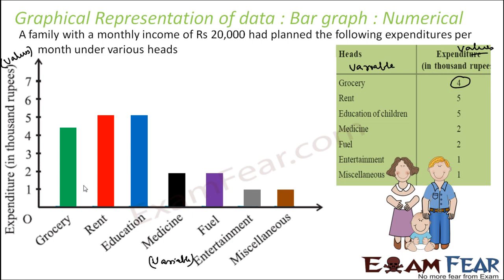From this bar graph, using different colors, I can see that rent and education take the major share of total expense, while entertainment and miscellaneous take the least. Note that the width and color of the bar are not important. One unit here depicts 1,000 rupees — that is why expenditure is labeled in thousands. We create units to simplify, since we cannot draw bars of actual length 1,000 centimeters.